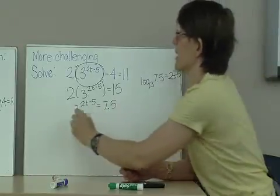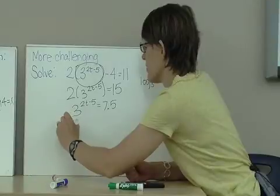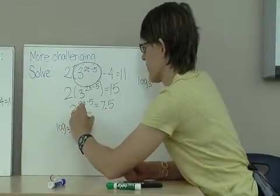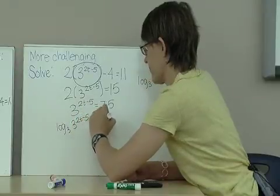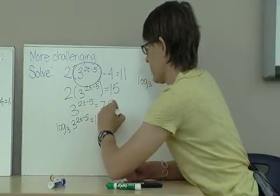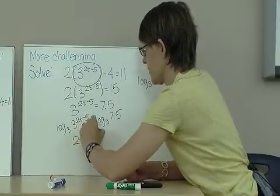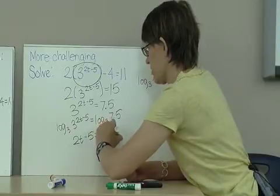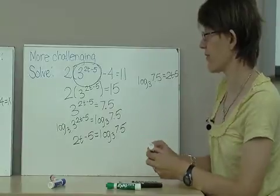So, again, taking the logarithm on both sides, logarithm base 3, I get 2t minus 5 equals log to the base 3 of 7.5. Again,